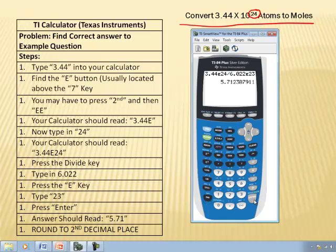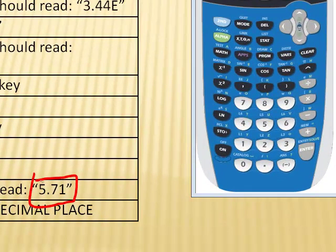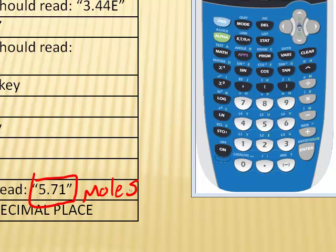And that gives me my answer, which is 5.712387911. So your calculator will read off this long, ridiculous decimal place, but I'm really only focused on the second or third decimal place. So it says here round to the second decimal place. So here is my answer, basically: 5.71. And I'm always going to put a unit with that, and it's going to be moles in this case.